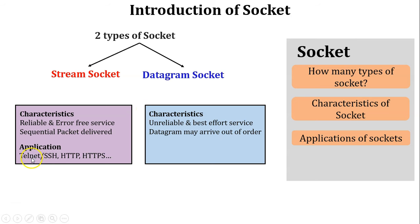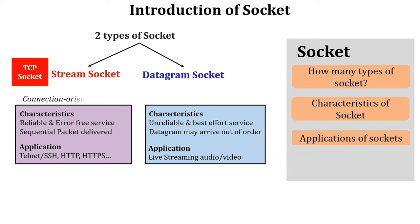Based on characteristics, the applications of stream socket are Telnet, SSH, HTTP, and HTTPS — request and response behavior. A connection is established before sending data, then data is sent, and then the connection is terminated. The application of datagram socket is live streaming of audio or video. No connection is required; the sender directly sends data through the datagram socket to the receiver. Therefore, stream socket is associated with TCP — also known as the connection-oriented socket — and datagram socket is associated with UDP, known as the connectionless socket.